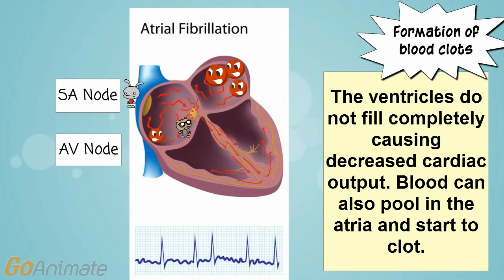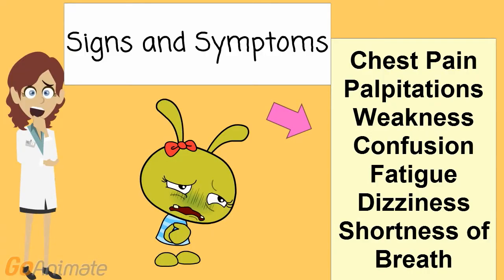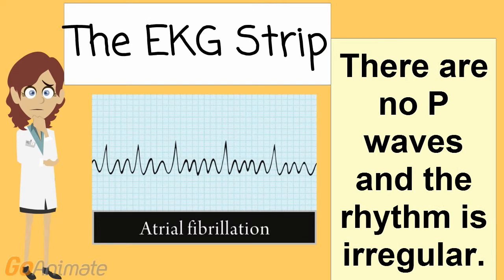Because of this, blood can also pool in the atria and start to clot. As far as signs and symptoms go, we could have chest pain, palpitations, weakness, confusion, fatigue, dizziness, and even shortness of breath.